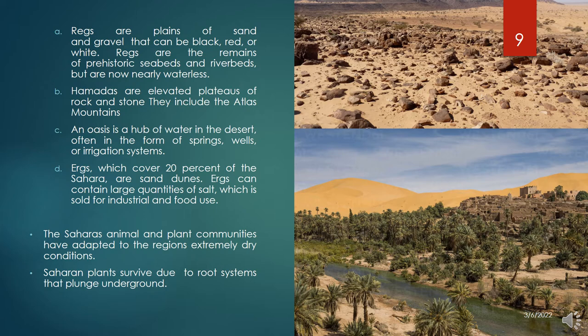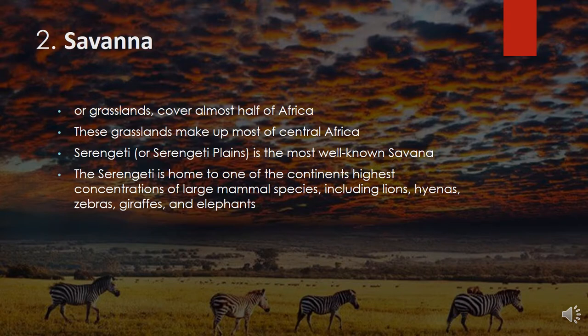Ergs can contain large quantities of salt, which is sold for industrial and food use. The Sahara's animal and plant communities have adapted to the region's extremely dry conditions. Saharan plants survive thanks to root systems that plunge as far as 24 metres underground. In parts of the Sahara, plants cannot take root at all — in the southern Libyan desert, no greenery exists for more than 195 kilometres. Savannah or grasslands cover almost half of Africa, more than 13 million square kilometres.